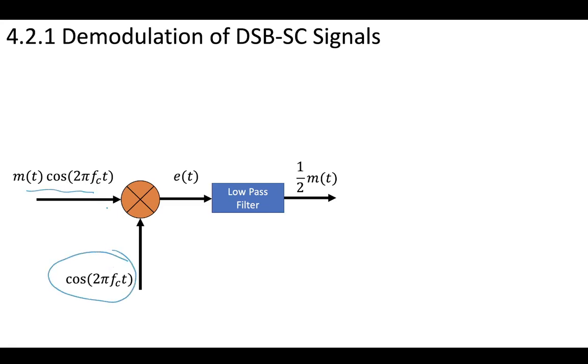We multiplied it by that second wave at our receiver. We multiplied it by that second wave. Notice it's at the exact same carrier frequency. We multiplied them together to get this E of T. And then we saw that if we apply the low pass filter, we can get our original message just multiplied by one half.